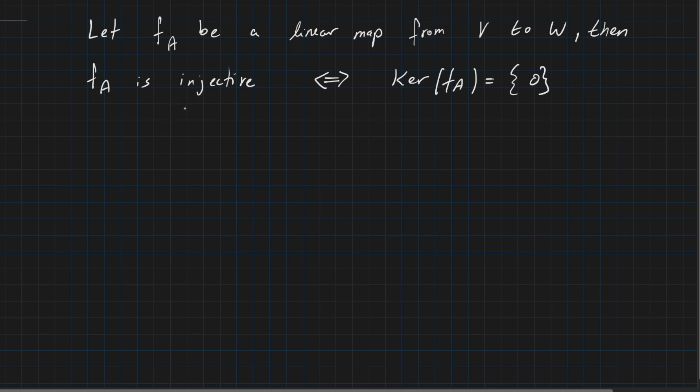So we are going to prove that being injective for a linear map FA is exactly the same as when the kernel of this linear map is just zero, so the zero vector. This is an element, so this is an element of V, because our linear map maps from the vector space V to the vector space W.